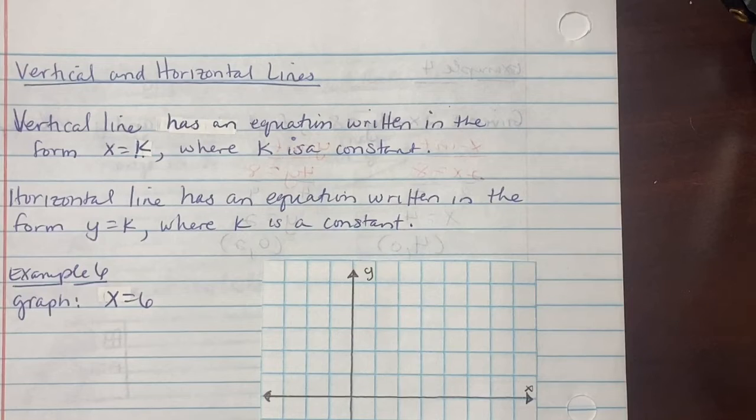Vertical and horizontal line. Vertical line has an equation written in the form of x = k, where k is a constant. Horizontal line has an equation written in the form of y = k, where k is also a constant.